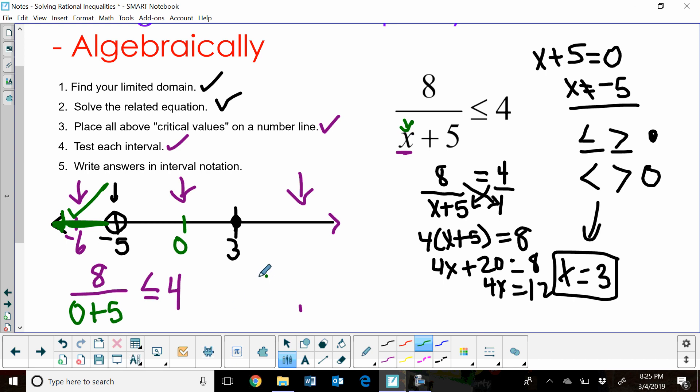So 0 plus 5 in the denominator. That becomes 8 fifths. Is 8 fifths less than or equal to 4? And the answer to that is yes, it is. This region also works. It's less than or equal to 4.